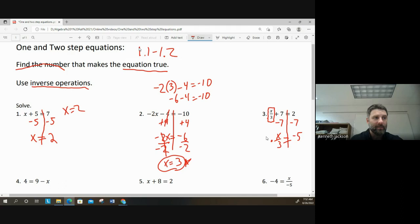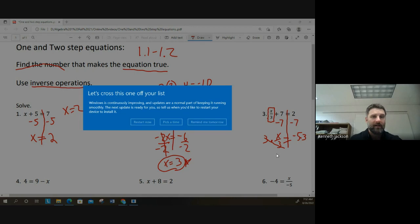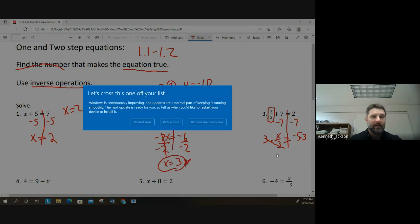To get rid of a divide by 3, x divided by 3, I need to multiply. So to get rid of a divide, I multiply. Whatever you do on one side, you do on the other. And that's x equals negative 15.